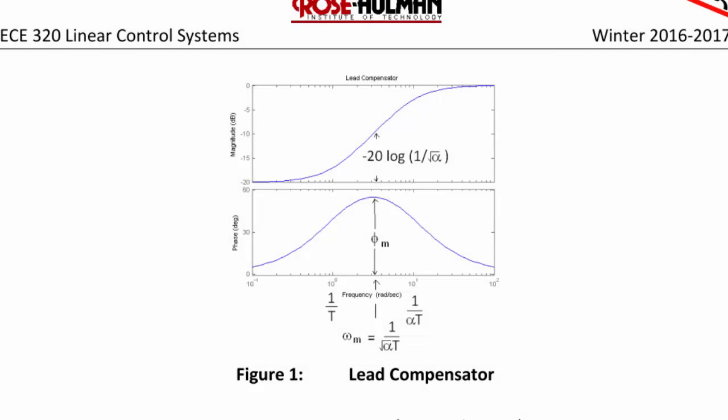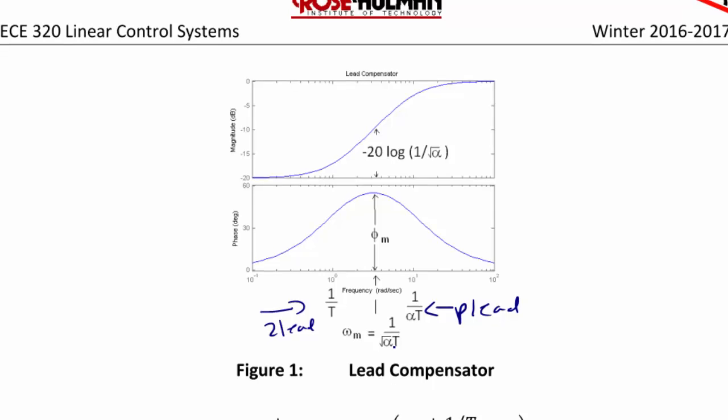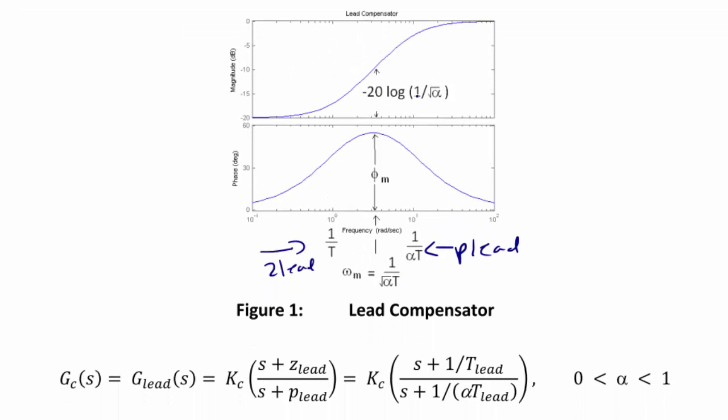So here we have the magnitude and phase plot for a lead compensator. Some things to notice here is that p_lead is greater than z_lead. So here we have p_lead. Here we have z_lead. And the shape is such that the phase is a positive angle and that ω_m right in the center at the maximum frequency is 1 over the square root of α times t or the magnitude is -20 log(1 / √α). So the expression we can use for the lead compensator is G_c(s) = k_c (s + z_lead) / (s + p_lead). Or alternately we can write it as (s + 1/t_lead) / (s + 1/(α·t_lead)).